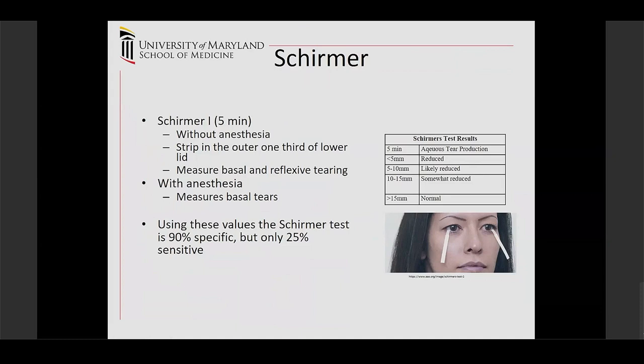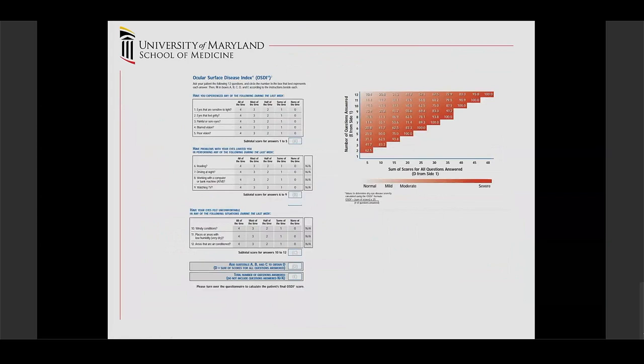The Ocular Surface Disease Index (OSDI) is a questionnaire used to measure dry eye symptoms. It has been very well validated — there are many questionnaires, but the OSDI is a favorite because it's relatively easy and fast, giving a good idea of how the patient's symptoms are affecting their daily life. It's only 12 questions, which is nice.